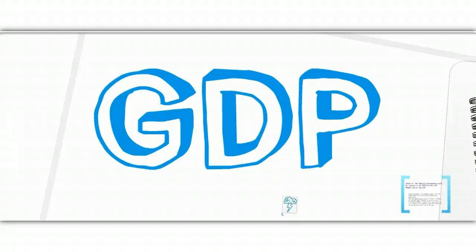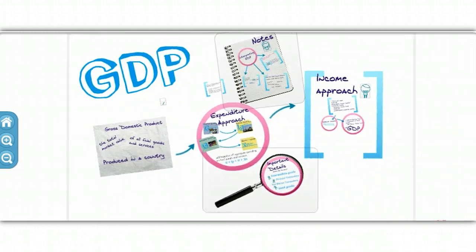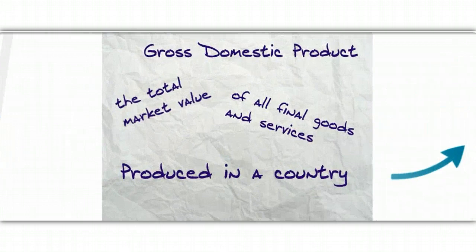I apologize if there's some noise in the background, but I am recording this in the computer lab and there's another class on the other side of the room. Today we're going to talk about GDP. GDP stands for the Gross Domestic Product. Its definition is the total market value of all final goods and services produced in a country over a period of time.